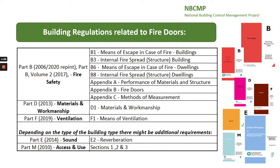The guidance for fire doors is given in the Technical Guidance Documents depending on the type of building used. For buildings other than dwellings, including flats, the guidance is given in Part B Fire Safety 2006-2020 reprint, sections B1 Means of Escape in Case of Fire and B3 Internal Fire Spread Structure. For dwelling houses and community dwellings less than eight bedrooms and three-storey height, guidance is given in Part B Volume 2 Dwelling Houses 2017 edition, Section B6 Means of Escape in Case of Fire.